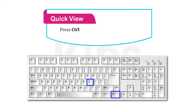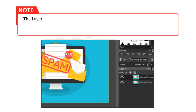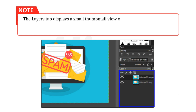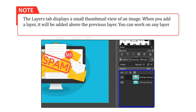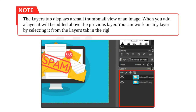Let us take a quick view. Press CTRL plus L to enable the Layers tab. The Layers tab displays a small thumbnail view of an image. When you add a layer, it will be added above the previous layer. You can work on any layer by selecting it from the Layers tab in the right panel.